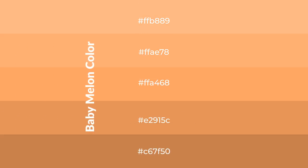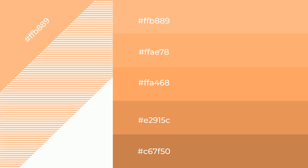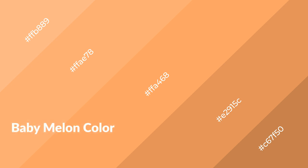To generate shades of a color, we add black to the color, and it is used in patterns and 3D effects. Layers and shades create depth and drama. Baby melon is a warm color and it emits cozier and active emotions.